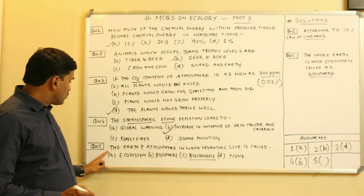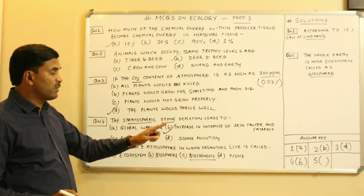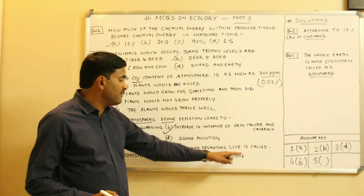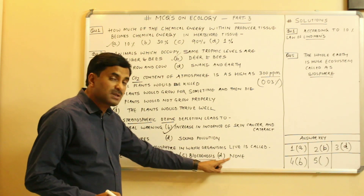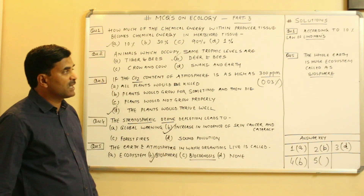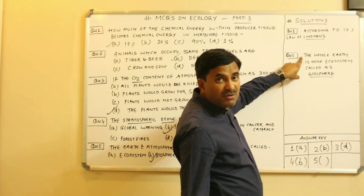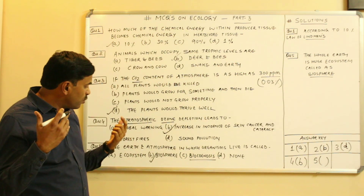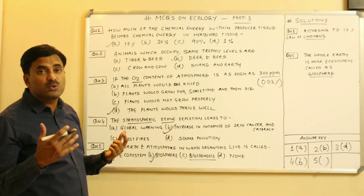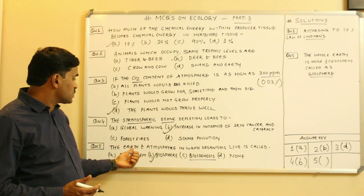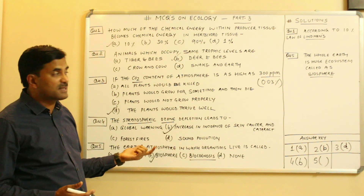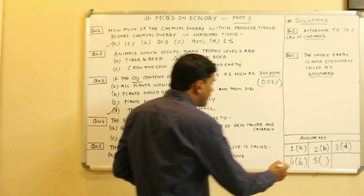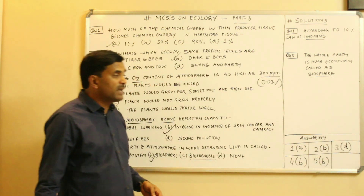Question five: the earth and atmosphere in which organisms live is called — ecosystem, biosphere, biocoenosis, or none? The answer is biosphere, because the whole earth is treated as one huge ecosystem called the biosphere. So the answer to question five is B — biosphere.